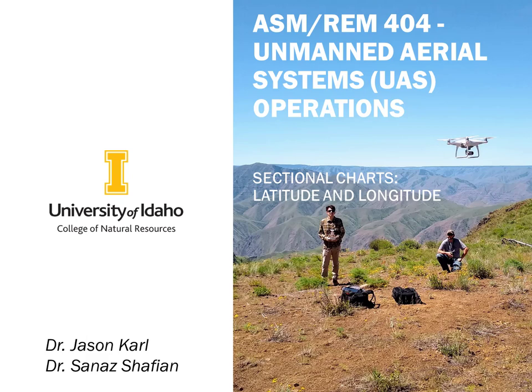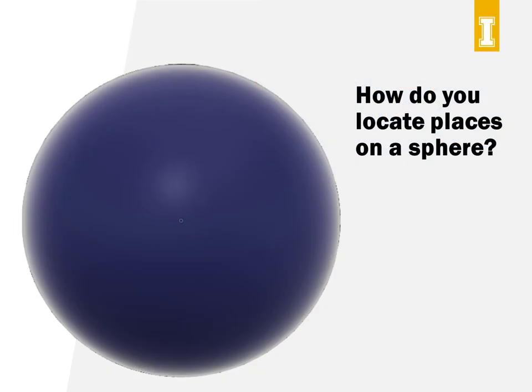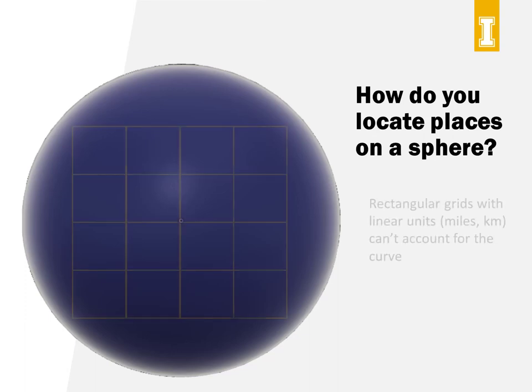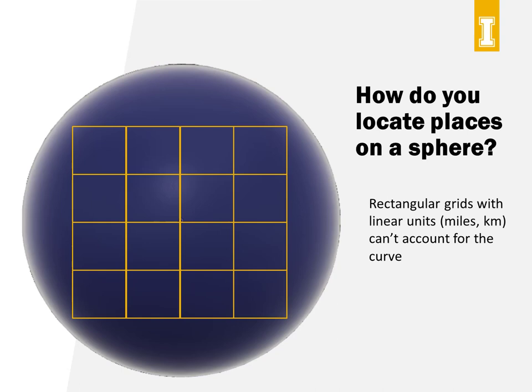To get us started, let's step back and talk about coordinate systems in general. Suppose you had this brand new planet you just discovered — we'll call this Racquetball World. How are you going to locate specific places on Racquetball World or tell two locations apart? You're going to need some sort of reference system. One approach is to put a grid over Racquetball World and use grid coordinates, kind of like graphs in math class. The trick, though, is that a regular grid just doesn't fit well onto the sphere of a planet.